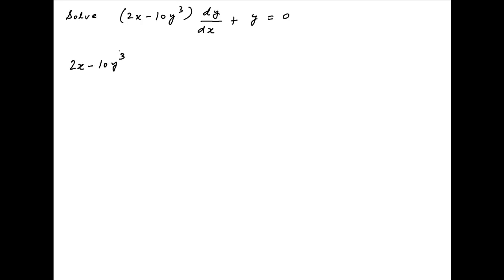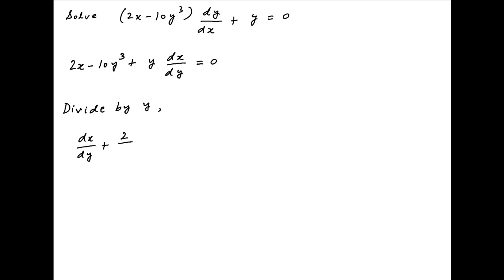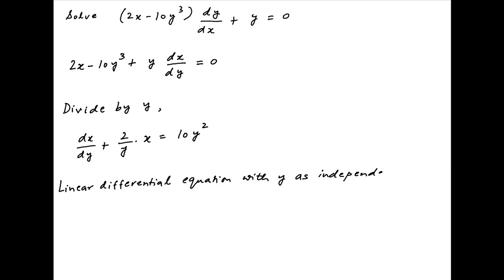The given differential equation can also be written as 2x minus 10y cube plus y times dx upon dy is equal to 0. Dividing by y and rearranging the terms, this equation becomes dx upon dy plus 2 upon y times x is equal to 10y square. Now this is a standard linear differential equation with y as the independent variable.